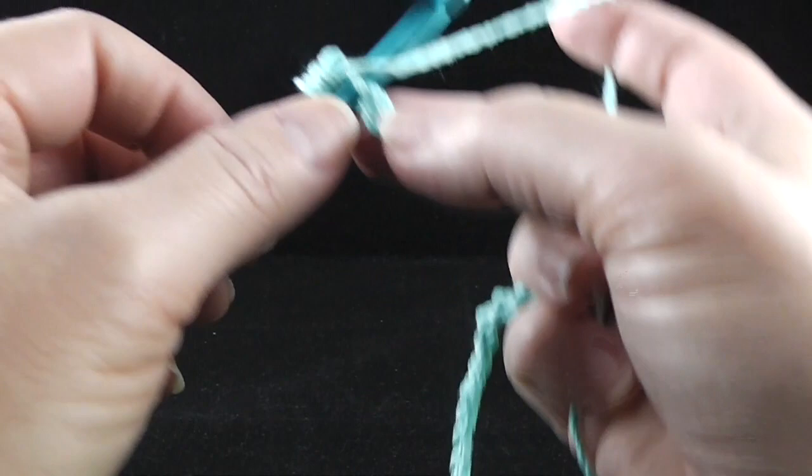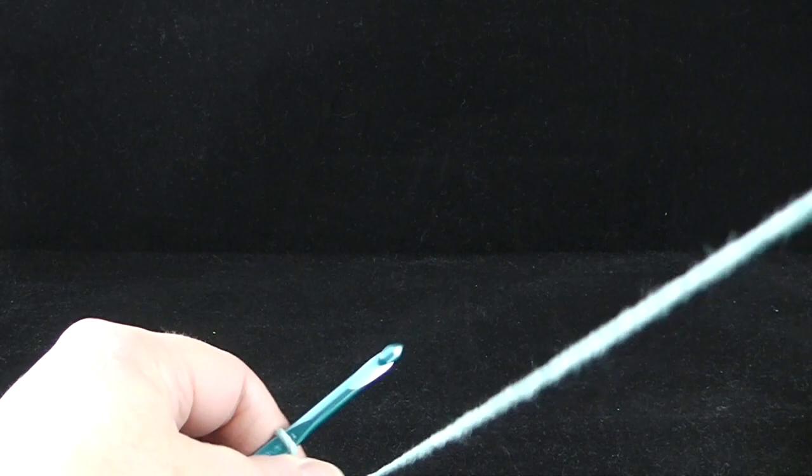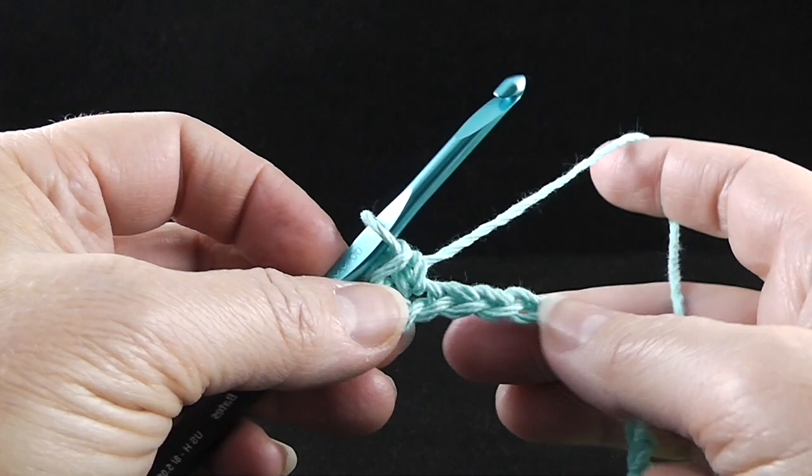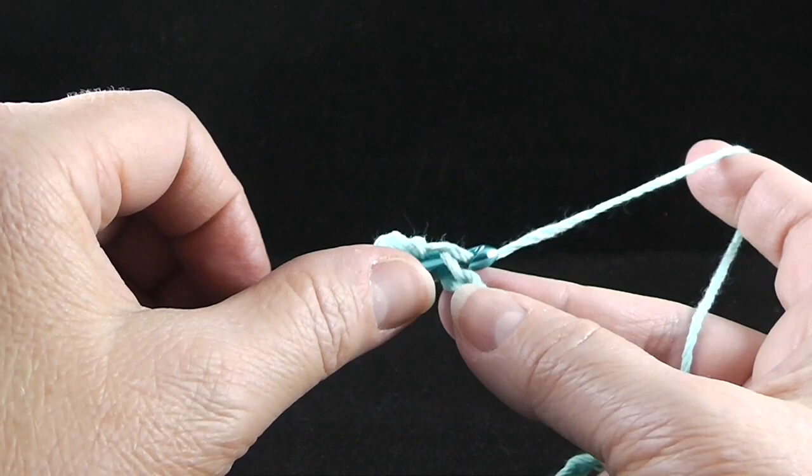Stick the hook in, pull up a loop, yarn over the back and pull the loop through. Now, some people may say, is it really important that you put the loop in back rather than in front? I think it is very important because it really does help your stitches to become more fluid.